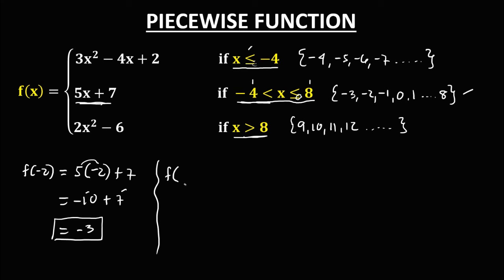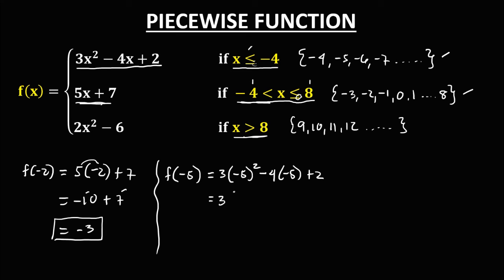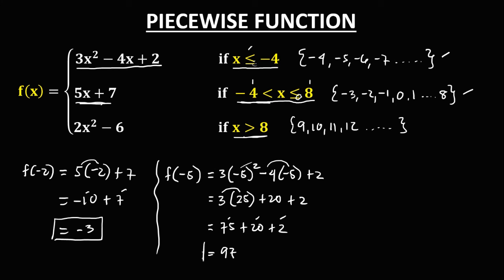For f(-5): since negative 5 belongs to this set of numbers, we are going to use this equation to solve for f(-5). We have 3 times x squared minus 4 times x plus 2, where x is negative 5. So we get 3 times negative 5 squared, which is positive 25, then minus 4 times negative 5, which is positive 20, then plus 2. Simplifying: 3 times 25 is 75, plus 20 plus 2. So 75 plus 20 is 95, plus 2 gives us f(-5) equal to 97.